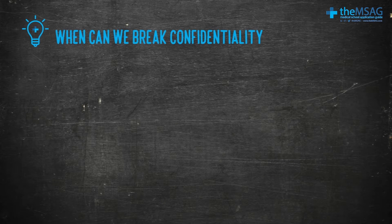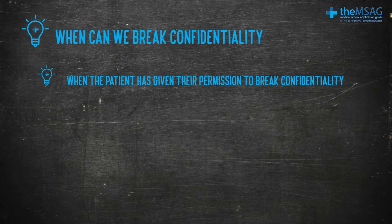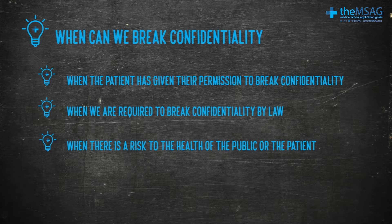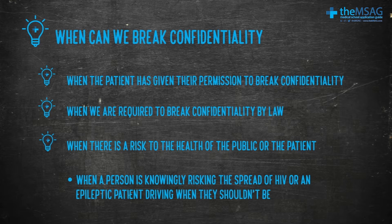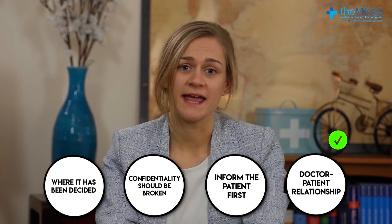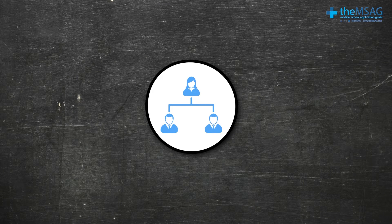However, there are times when we do need to break confidentiality. They tend to be when the patient has given their permission to break confidentiality, when we're required to break confidentiality by law, or when there's a risk to the health of the public or the patient. Possible scenarios include a person knowingly risking the spread of HIV, or an epileptic patient driving when they shouldn't be. In instances where it's been decided that confidentiality should be broken, we would usually inform the patient first, as this can help to maintain the doctor-patient relationship. These cases would usually involve discussing the case with a senior colleague or your defence union first.